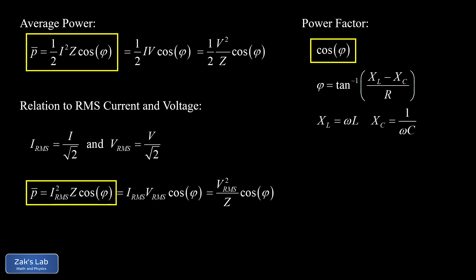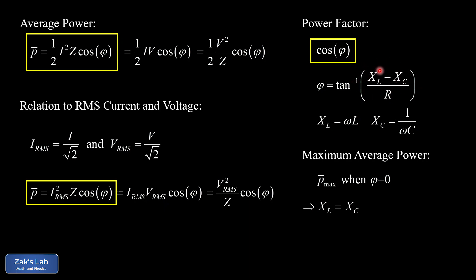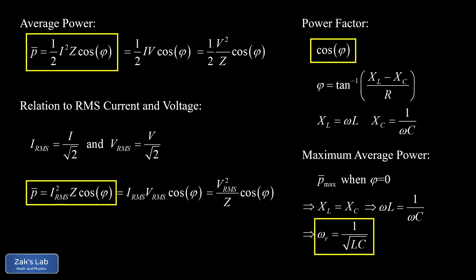The average power delivered to the circuit depends on the driving frequency. Maximum power occurs at φ = 0, which maximizes the cosine function, requiring X_L = X_C. Setting ωL = 1/(ωC), solving for ω gives the resonant frequency ω_r = 1/√(LC). This is called the resonant frequency because it's the special frequency at which power — and current amplitude — is maximized.